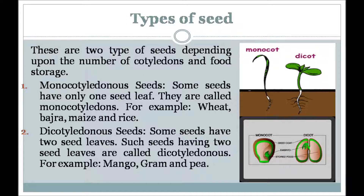Types of seeds: There are two types of seeds depending upon the number of cotyledons and food storage — monocotyledons and dicotyledons. Some seeds have one seed leaf; they are called monocotyledons. For example, wheat, barley, maize and rice. While some other seeds have two seed leaves; they are called dicotyledons. For example, mango and pea.